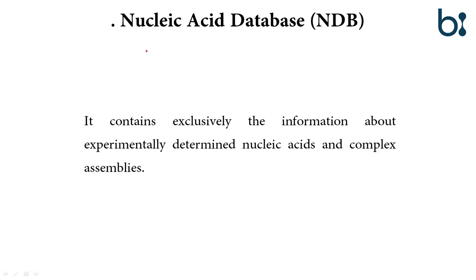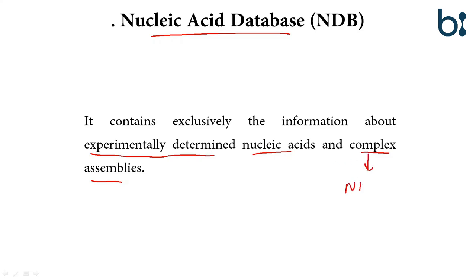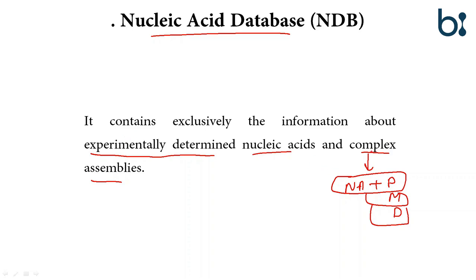The first database is the Nucleic Acid Database. It contains information about the structure of nucleic acids and complex assemblies which are experimentally determined. Here, complex means nucleic acid with proteins, with metal ions, or with drugs. The database stores information about nucleic acids and complexes formed with nucleic acids, and the data are experimentally determined.